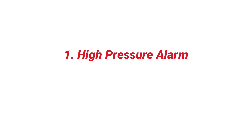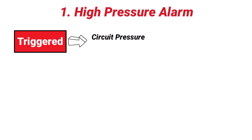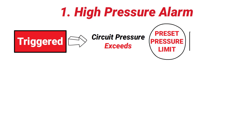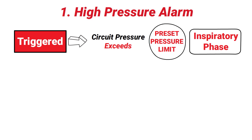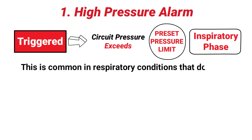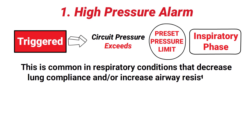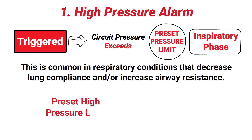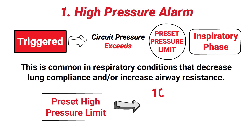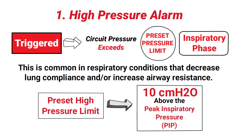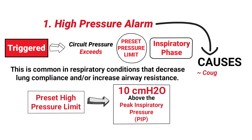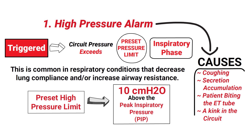First, there is the high pressure alarm. A high pressure alarm in mechanical ventilation is triggered whenever the circuit pressure exceeds a preset pressure limit during the inspiratory phase of breathing. This is common in respiratory conditions that decrease lung compliance and/or increase airway resistance. The preset high pressure limit is typically set around 10 cmH₂O above the peak inspiratory pressure. Other causes include coughing, secretion accumulation, patient biting the ET tube, or a kink in the circuit.